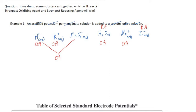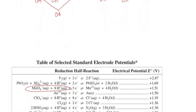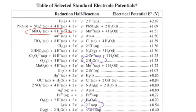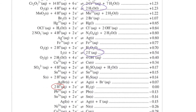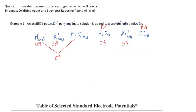With all possibilities listed, the question is: which ones will actually gain or lose electrons — that is, which are the strongest? The strongest oxidizing agent is permanganate combined with H⁺ (highest on the table), and the strongest reducing agent is the iodide ion (furthest down the table). These are the species that will actually react.